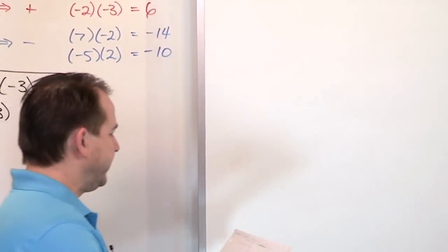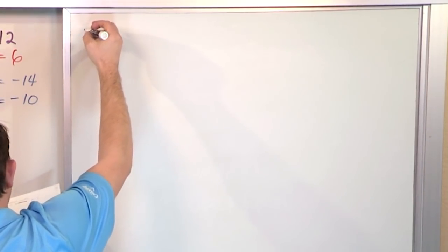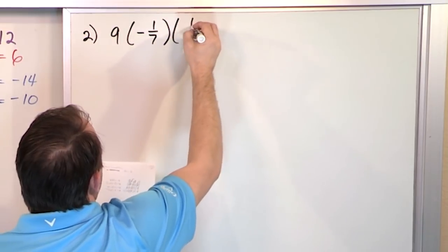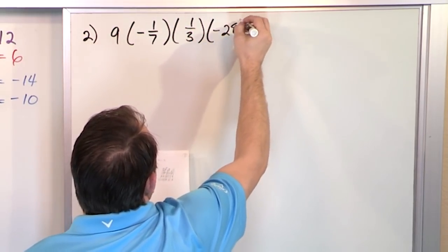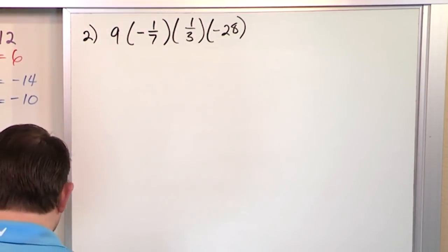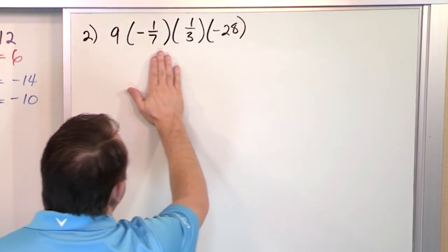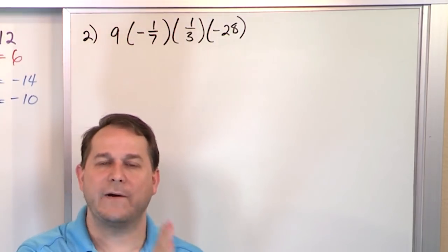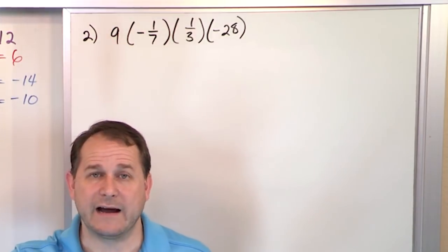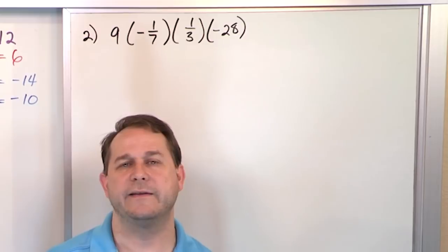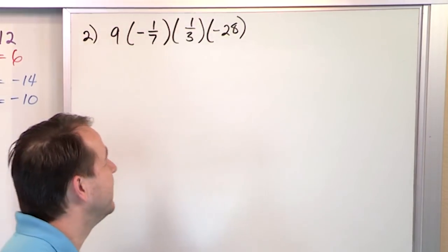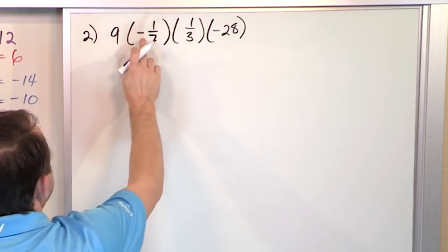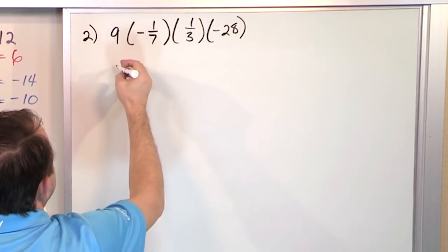Let's do another one that involves fractions. We have 9 times negative 1/7 times 1/3 times negative 28. When you multiply a number times a fraction, you multiply the numerators together and separately multiply the denominators. The 9 is really 9 over 1, so the numerators would be 9 times negative 1, giving negative 9 on top. On the bottom, 1 times 7 is 7, so you get negative 9/7.